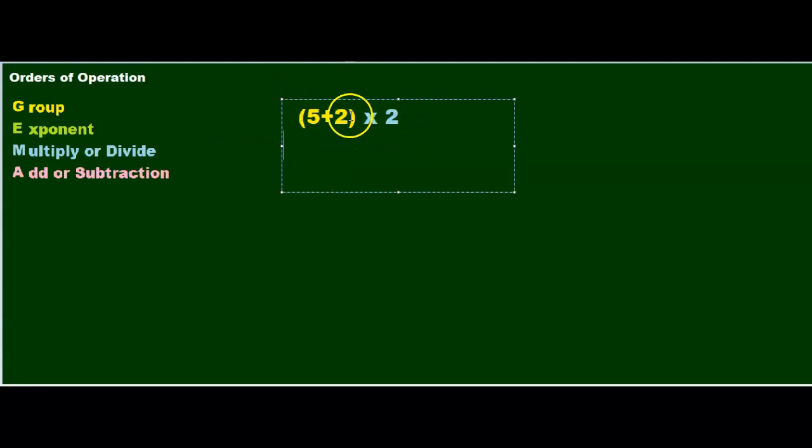Now, in this problem, we have a group here in yellow. So, normally, you would have to do the multiplication first before you add. But in this case, we're going to do the group first or evaluate the group first, which is 5 plus 2, which gives me 7. Then, you multiply that by 2, and that gives me 14.